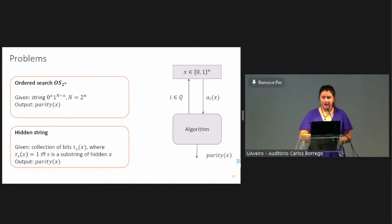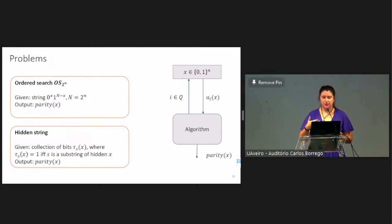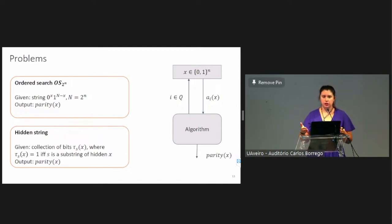Since we are going to work with the polynomial method, we have to work with boolean functions. Because of this, instead of having an output to be the whole n-bit string, we're going to say that the output is the parity of X, or XOR of all bits.